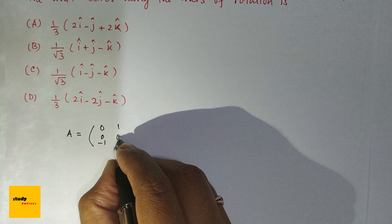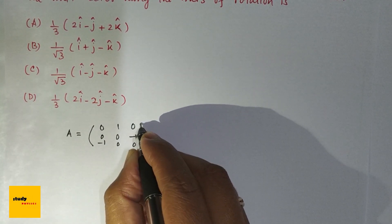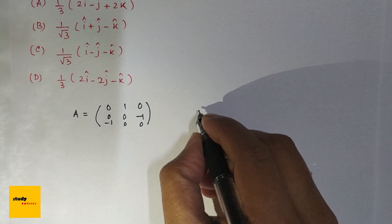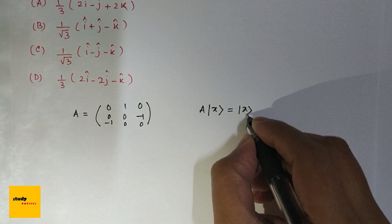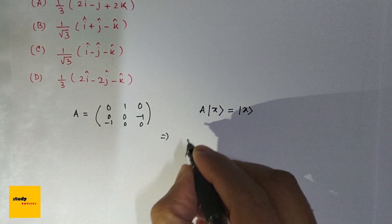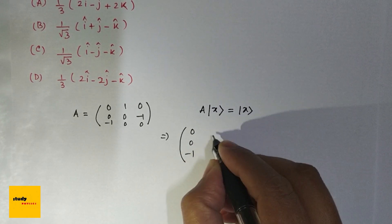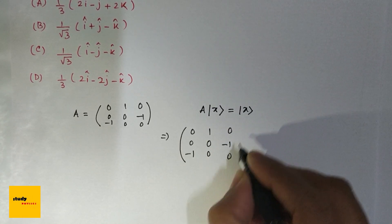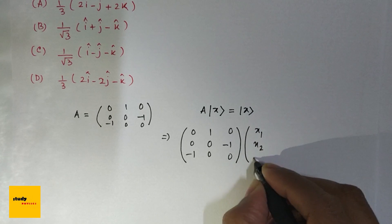(1, 0, 0), (0, -1, 0). So due to the rotation, we can write that A|x⟩ equals |x⟩. That gives us the matrix (0, 0, -1; 1, 0, 0; 0, -1, 0) times the vector (x₁, x₂, x₃)...